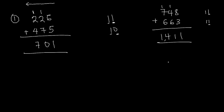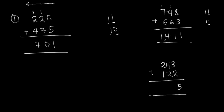Let's look at another question: 243 plus 122. This is a simple addition. 3 plus 2 gives 5 — write 5, nothing to carry. 4 plus 2 gives 6 — write 6, nothing to carry. 2 plus 1 gives 3 — write 3. So the final answer is 365.